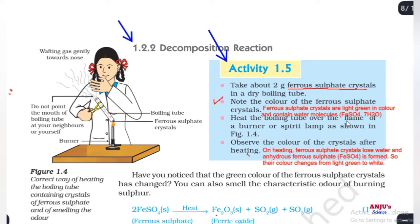Heat the boiling tube over the flame using a spirit lamp. Observe the color of the crystal after heating. We have to observe the color of ferrous sulfate after heating as well. So we need to observe two observations: first and second.